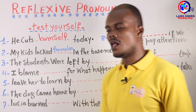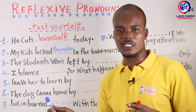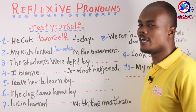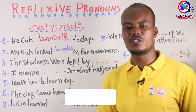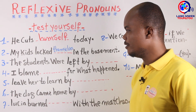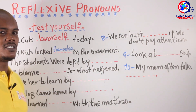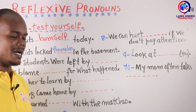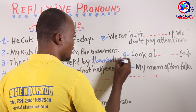Number three: 'The students were left by ___.' You know you can use reflexive pronouns with prepositions like 'by,' 'of,' or 'with.' Pause the video and guess the reflexive pronoun. The answer is: 'The students were left by themselves.' When you replace 'the students' by a subject pronoun, you get 'they,' and the reflexive pronoun for 'they' is 'themselves.'